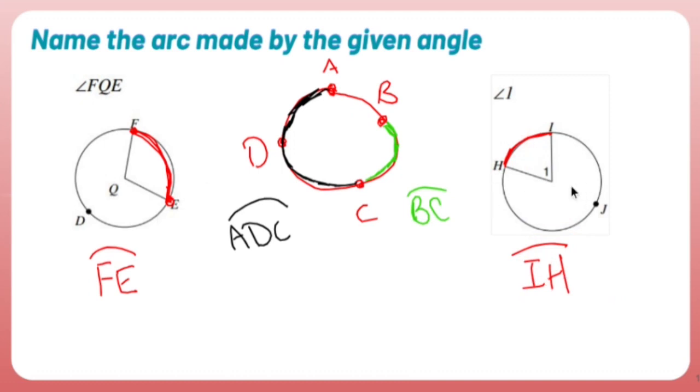When I'm reading these, I'm looking at the letters, and that's telling me the direction that I'm going in which part of the circle that I care about. So that's how I name arcs using angles.